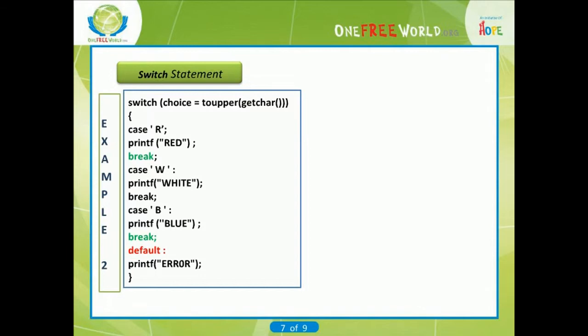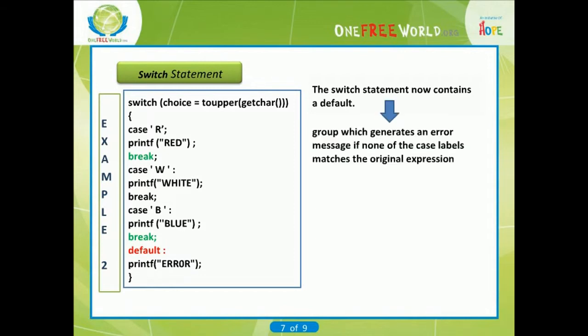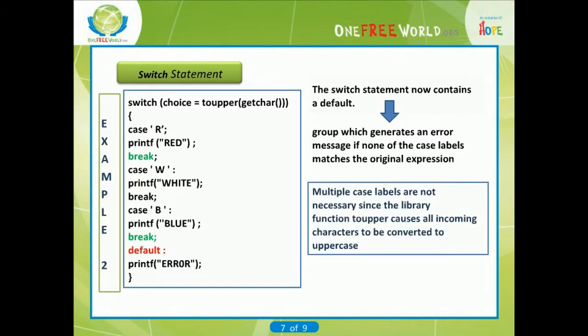Example 2 on switch statement: here is a variation of the switch statement. The switch statement now contains a default group consisting of only one statement, which generates an error message if none of the case labels matches the original expression. Each of the first three groups of statements now has only one case label. Multiple case labels are not necessary in this example, since the library function toupper causes all incoming characters to be converted to uppercase. Hence, choice will always be assigned an uppercase character.